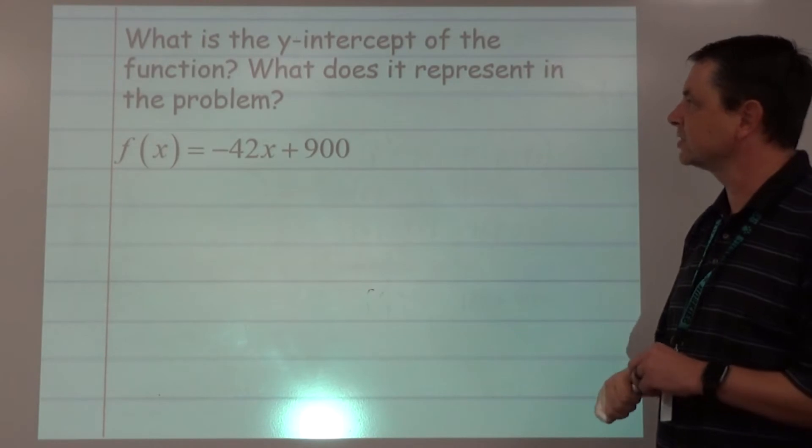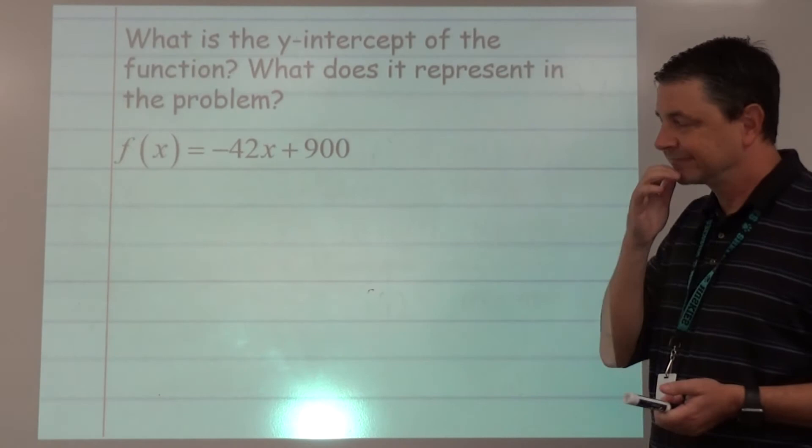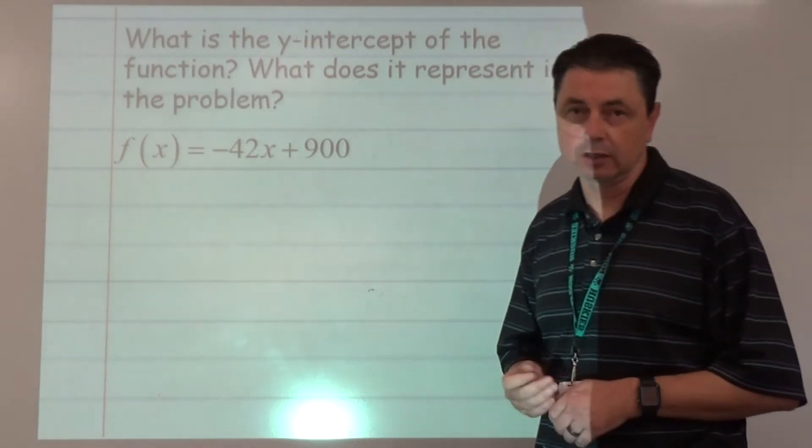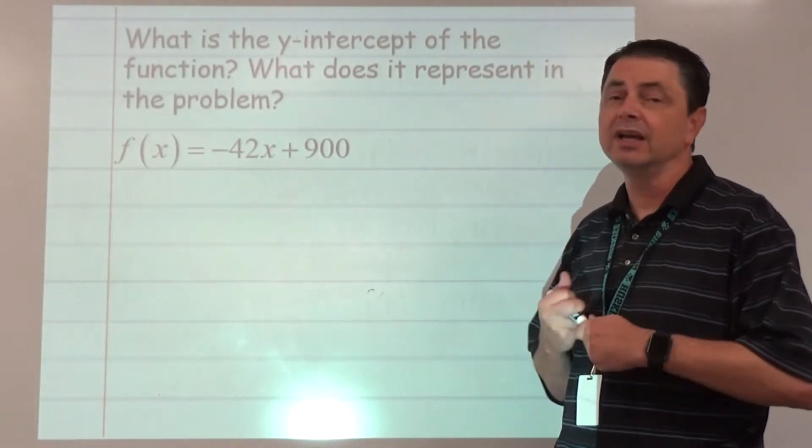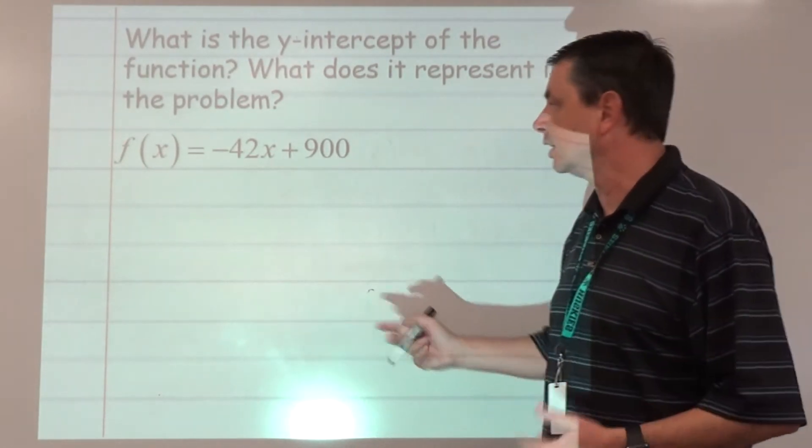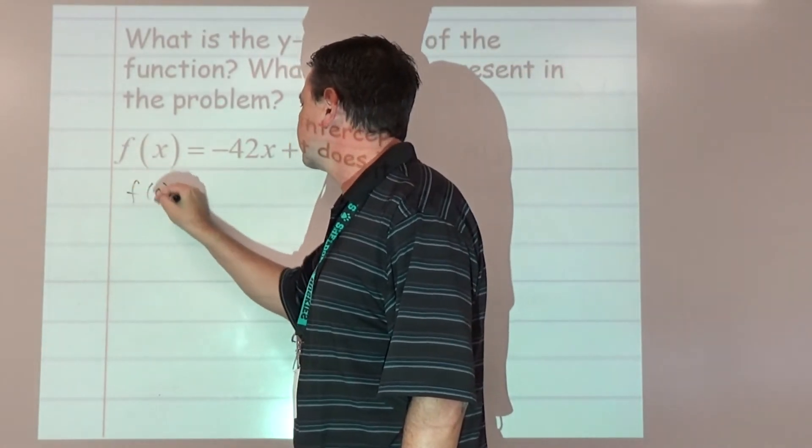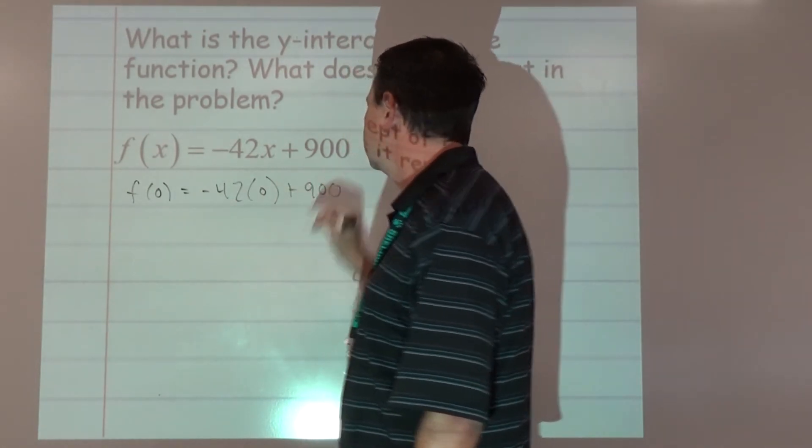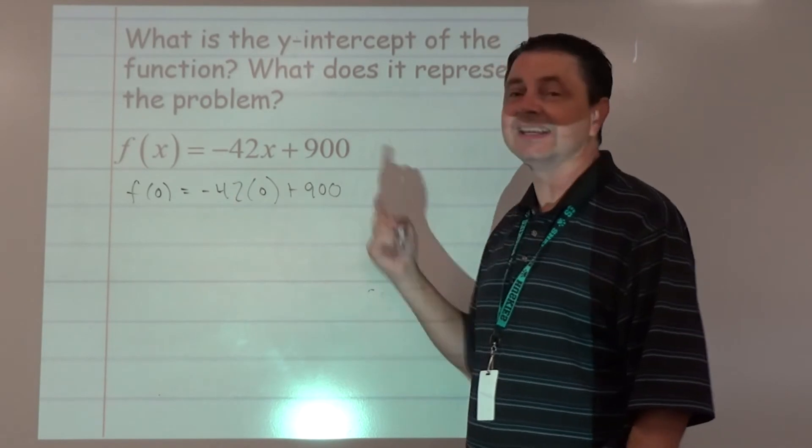What is the y-intercept of the function? We can actually look at this function and see the y-intercept because it's in y equals mx plus b form, and b is the y-intercept. But in general, if you need to find any function's y-intercept, just replace x with zero. So f(0) equals negative 42 times 0 plus 900. That's 900.